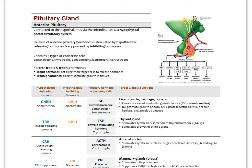There are five different types of endocrine cells in the anterior pituitary: somatotrophs, thyrotrophs, gonadotrophs, lactotrophs, and corticotrophs. They secrete what are called tropic and trophic hormones. Tropic hormones act directly on target cells to release hormones, while trophic effects mean directly stimulating growth in tissue. Many hormones released by the anterior pituitary have trophic effects.